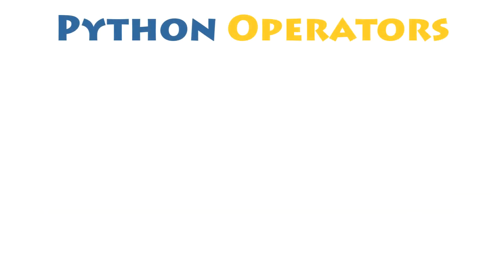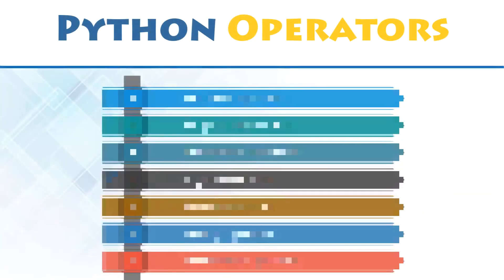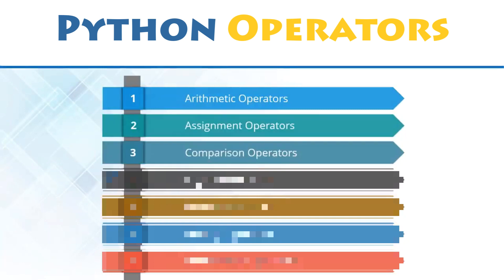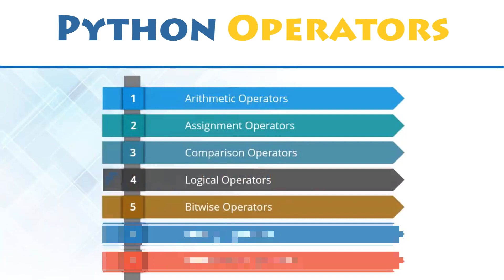Types of operators. Depending upon the type of operations you want to perform, there are seven types of operators in Python: Arithmetic operators, Assignment operators, Comparison operators, Logical operators, Bitwise operators, Identity operators, and Membership operators.